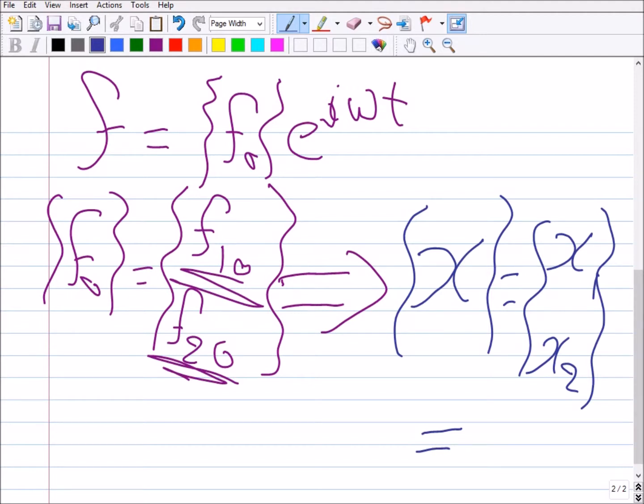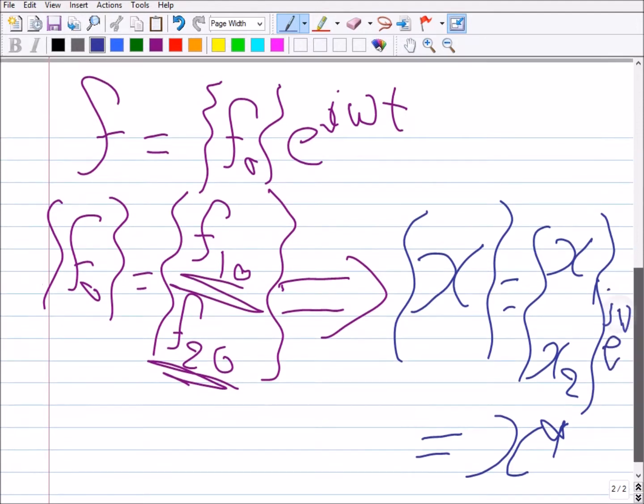Maybe we can give them a little bit different notation. I don't want to use x₀. Let's say x* as the magnitude vector times e^(jωt), which will appear again here, xe^(jωt). So if you have harmonic excitation, what you will get is harmonic response.